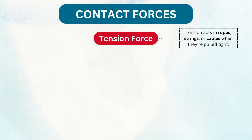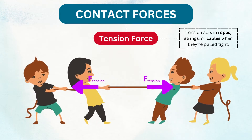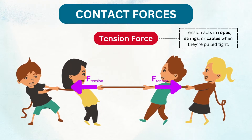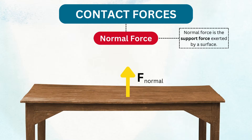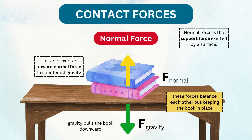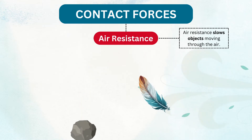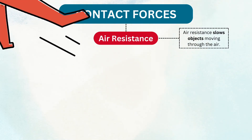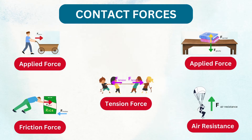Another contact force is tension, which acts in ropes, strings, or cables when they are pulled tight. Think about a game of tug of war — the rope stretches as both teams pull in opposite directions, creating tension that holds it together. Then there's normal force, the support force exerted by a surface to keep objects from sinking through it. When you place a book on a table, the table pushes back with normal force to counteract gravity, keeping the book in place. And finally, there's air resistance, also known as drag, which slows objects moving through the air. This is why skydivers rely on parachutes — they increase air resistance to slow their descent, allowing for a safe landing.